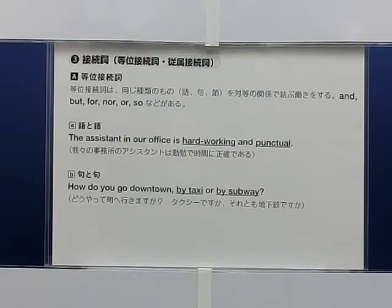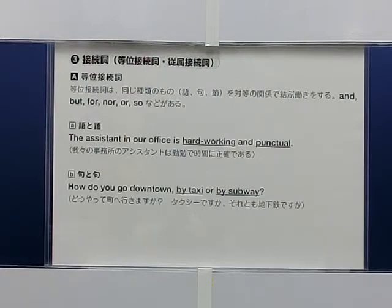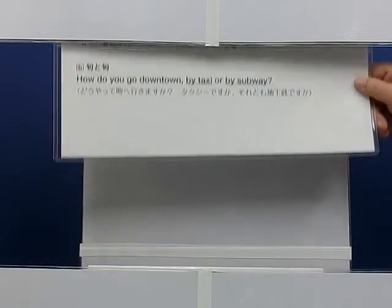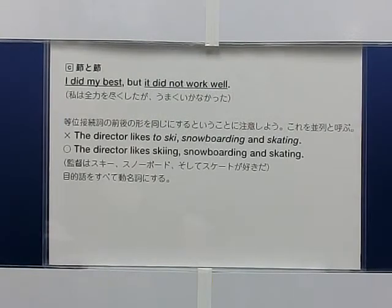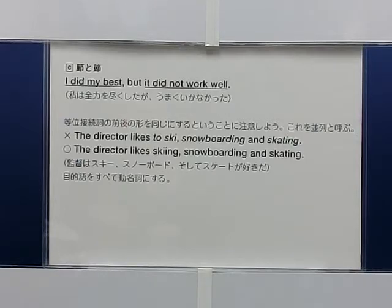接続詞について。等位接続詞は、同じ種類のもの（語・句・節）を対等の関係で結ぶ働きをする。And, but, for, nor, or, so などがある。例：The assistant in our office is hardworking and punctual.（我々の事務所のアシスタントは勤勉で時間に正確だ。）How do you go downtown? By taxi or by subway?（どうやって町へ行きますか？タクシーですか、それとも地下鉄ですか？）The director likes skiing, snowboarding and skating.（監督はスキー、スノーボード、そしてスケートが好きだ。）